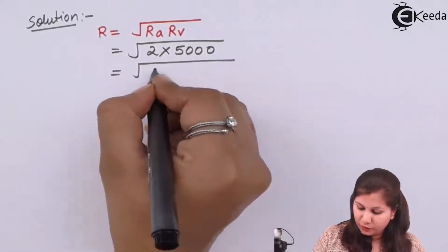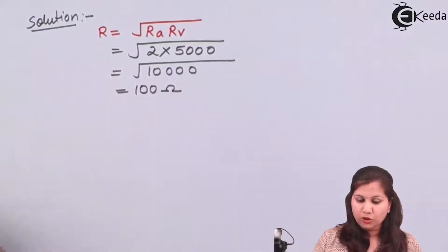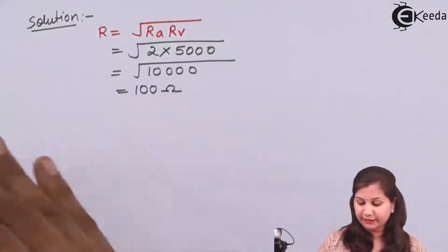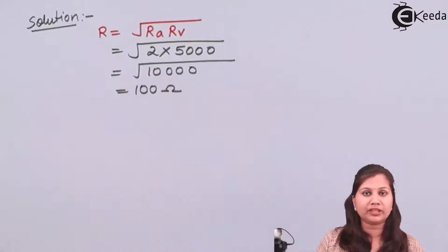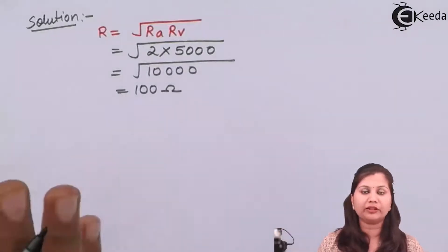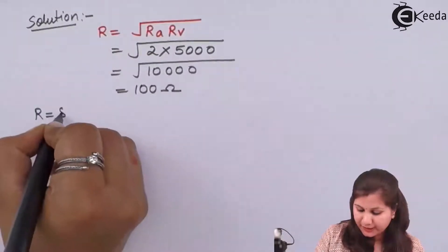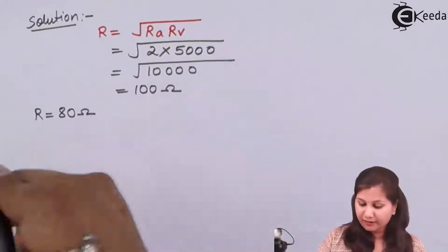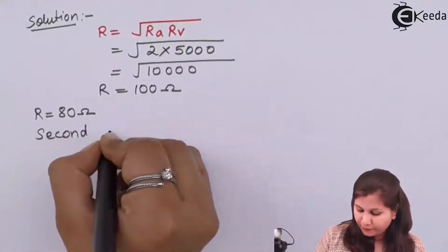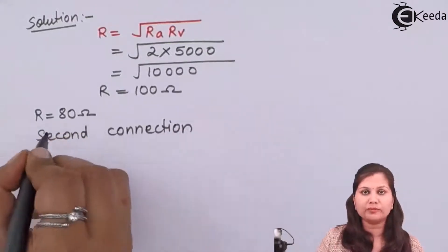So we get the threshold value as 100 ohms. All resistances greater than 100 ohms will be measured using the first connection and all those less than 100 ohms using the second connection. The resistance we want to measure is 80 ohms, which is less than 100 ohms, so we are going to use the second connection of the ammeter-voltmeter method for measuring this 80 ohm resistance.